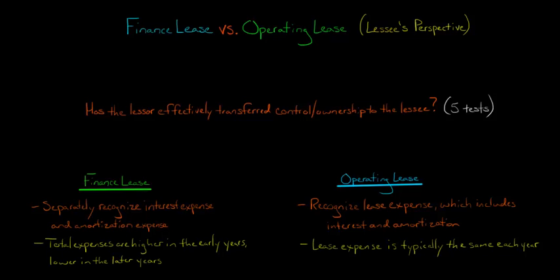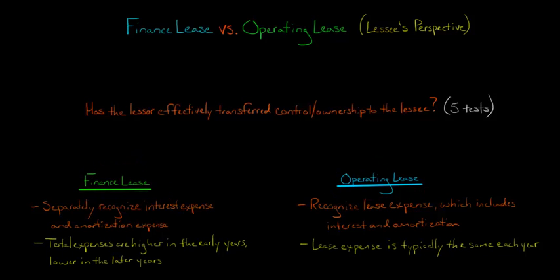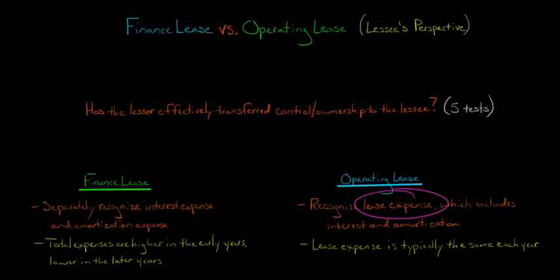If you had a lease, I want to show you how it would be different if you categorize it as finance relative to operating. With a finance lease, you're going to have two different expenses recognized: interest expense and amortization expense separately. With an operating lease, you're just going to have one expense called lease expense.